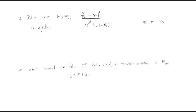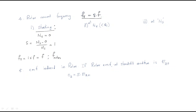At starting, the induction motor has no speed — that is zero. So what is the slip? Slip equals Ns minus zero by Ns, so slip becomes one. Then rotor frequency equals one times f, meaning the rotor frequency will be equal to the stator frequency. Both frequencies are the same at the starting condition.